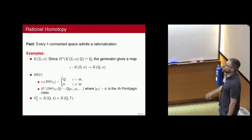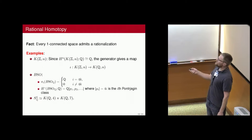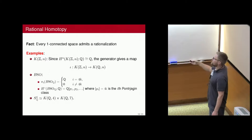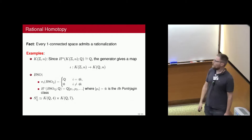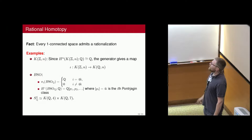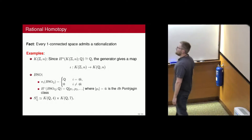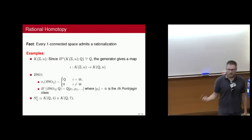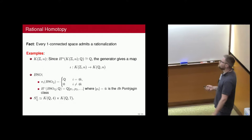If we look at BSO, taking the stable limit, the homotopy groups are going to be Q in degree 4k. Its rational cohomology is a polynomial ring in the Pontryagin classes. The rational four-sphere, given that rationally it only has two non-trivial homotopy groups, is going to be equivalent rationally to a product of Eilenberg-MacLane spaces.